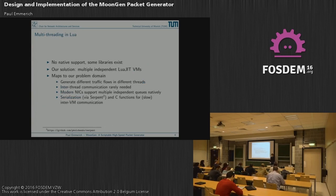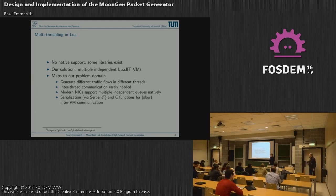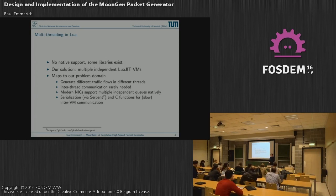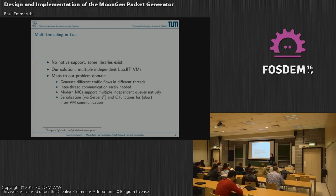So how do we do multithreading? Some of you probably know some libraries for Lua that claim to do multithreading. There are some libraries, but they are not that well maintained, and most of them do not really map to our problem domain. So what we did — we did a simple brute force solution. We just start multiple independent LuaJIT virtual machines: multiple Lua states, each one gets pinned to a separate thread and a separate CPU core. And then you have multithreading. The obvious disadvantage is you now have no shared state between the Lua VMs, but it turns out that for our use case we don't actually need shared state.